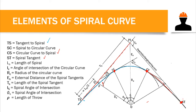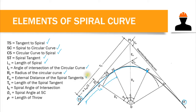We also have LS, the length of the spiral curve. We have Ic, which is the angle of intersection or the angle of the circular curve. We also have the radius of the circular curve Rc — we already know how to compute Rc from simple curves. There is also the external distance of the spiral tangent, which is the distance from PI to the simple curve, and the length of the spiral tangent from TS to PI.